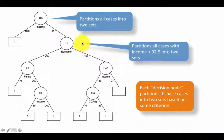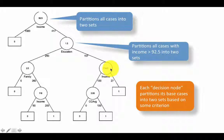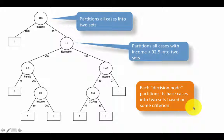What are the cases which come to this node? Clearly from the tree, the cases that reach this node are those that have income greater than 92.5. What this node in turn is doing is taking all the cases which reach the node — those with income greater than 92.5 — and then partitioning them into two sets based on education. If education is less than or equal to 1.5, it goes into one set; if education is greater than 1.5, it goes into the other. So this is the partitioning process going on at every node — each decision node partitions its base cases into two sets based on some criterion.